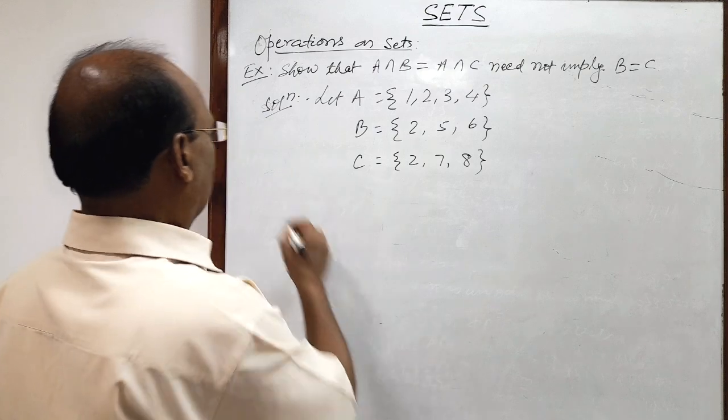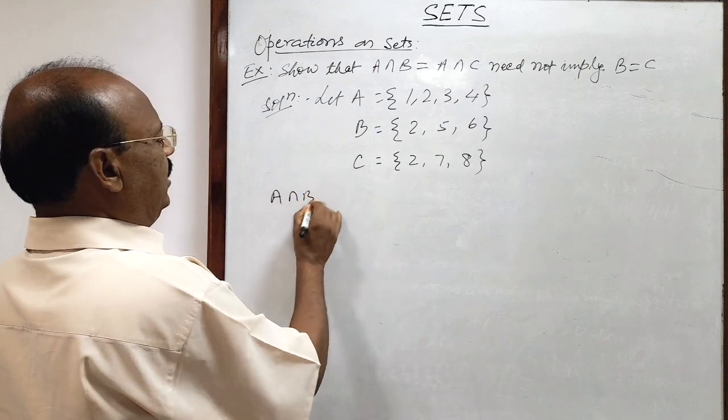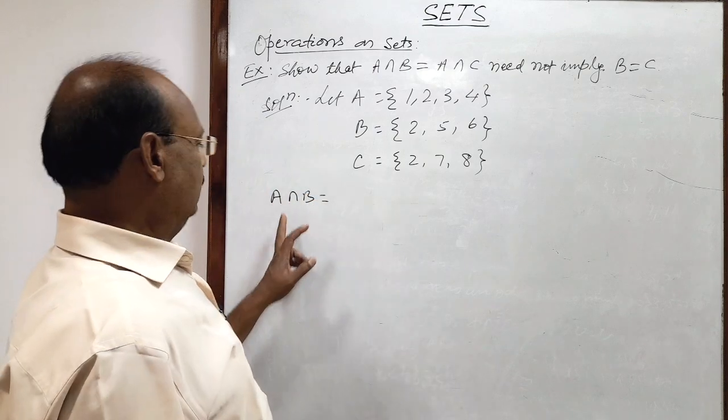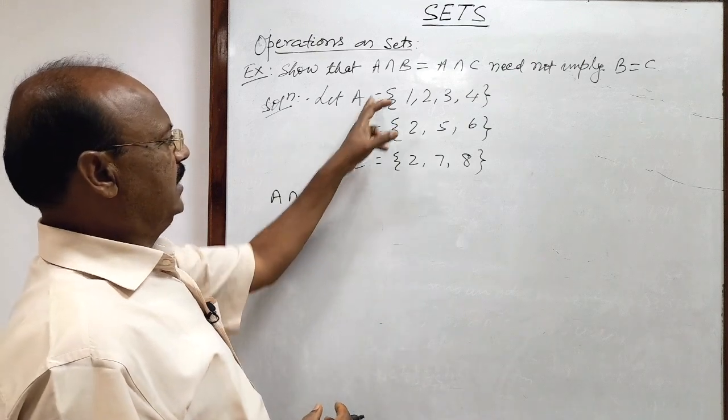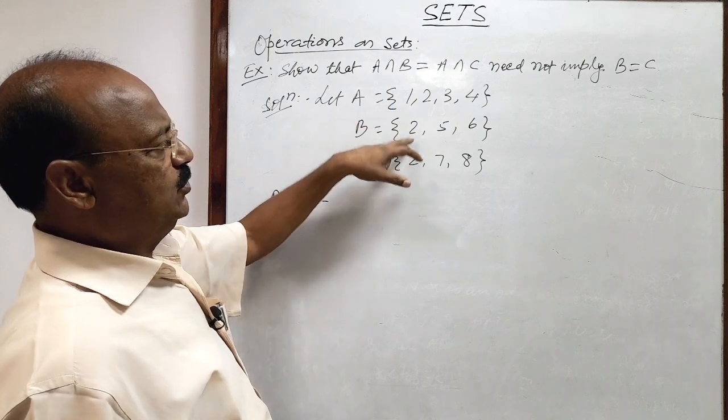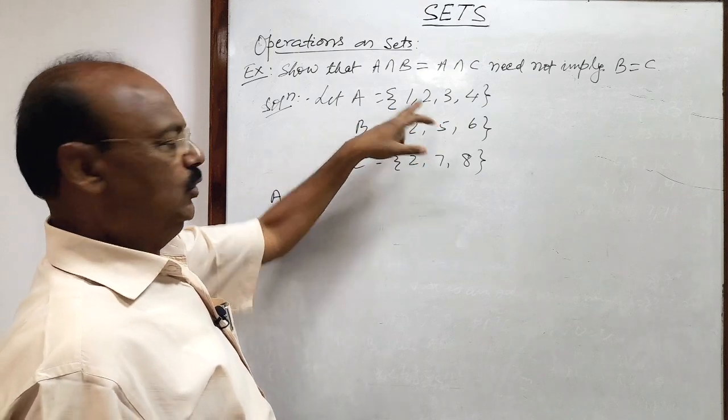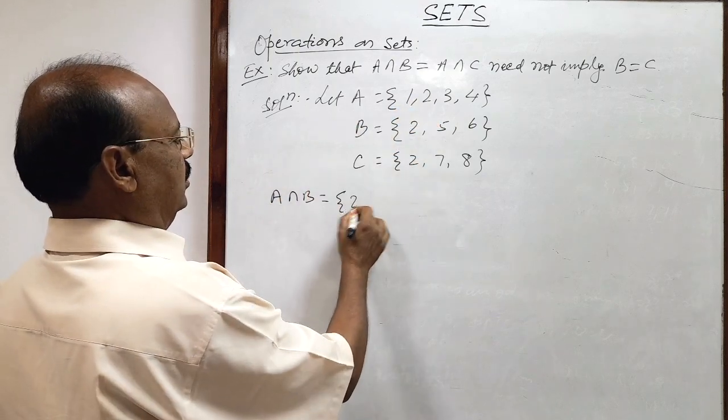Then you see here A intersection B will be how much? Here we have to collect only those elements which are common in both the sets A and B. So which element is common in these two sets? This element 2.